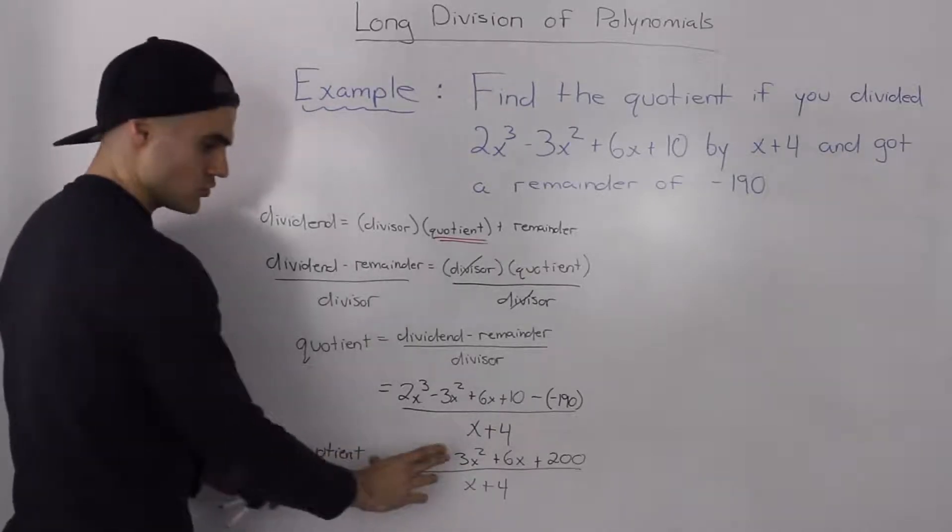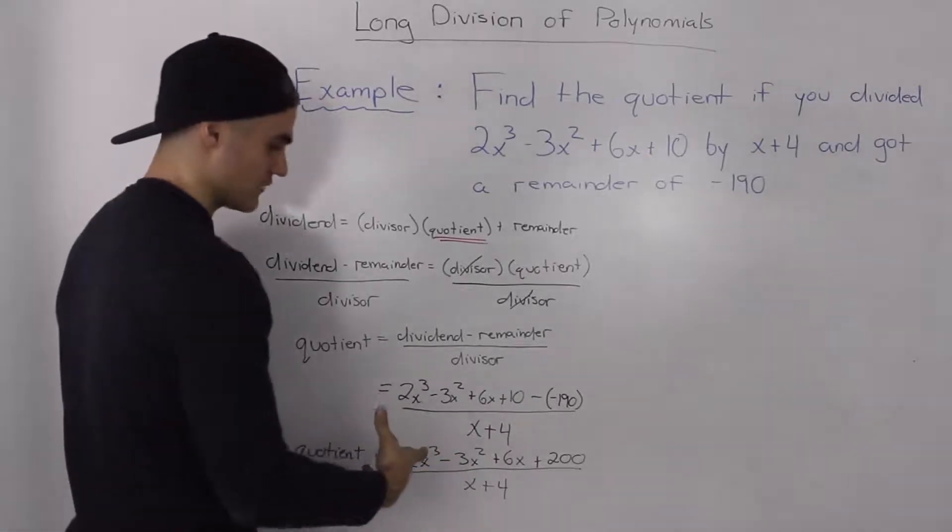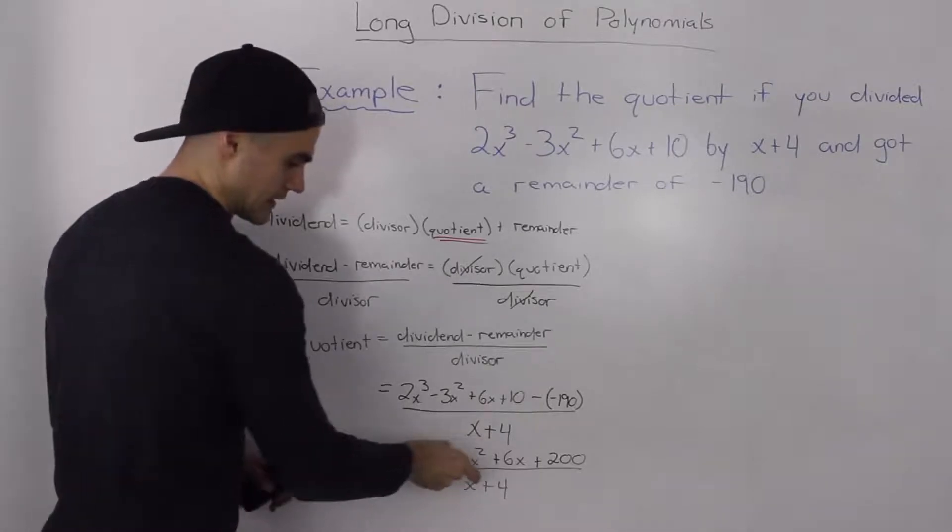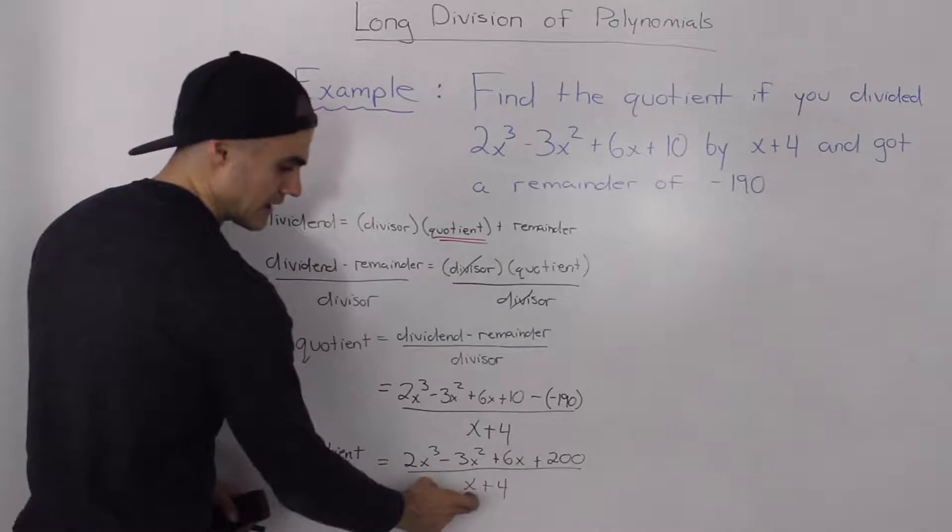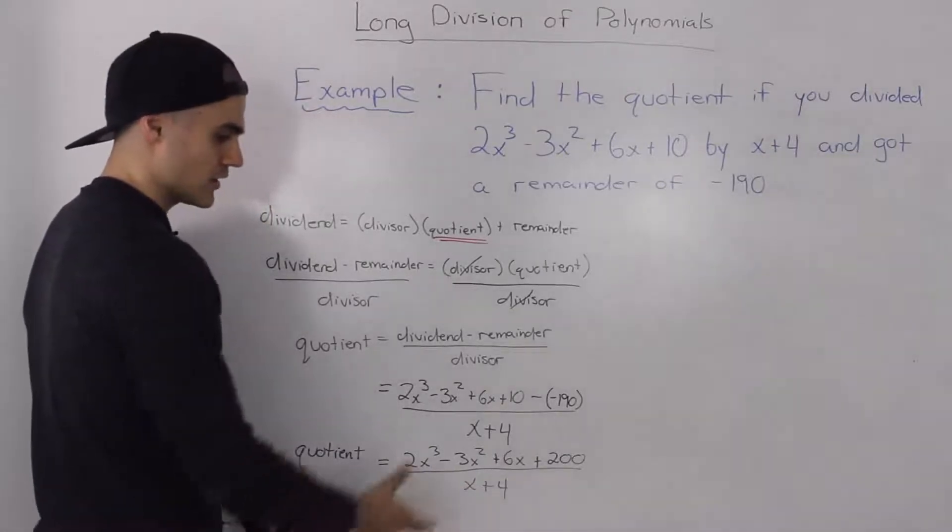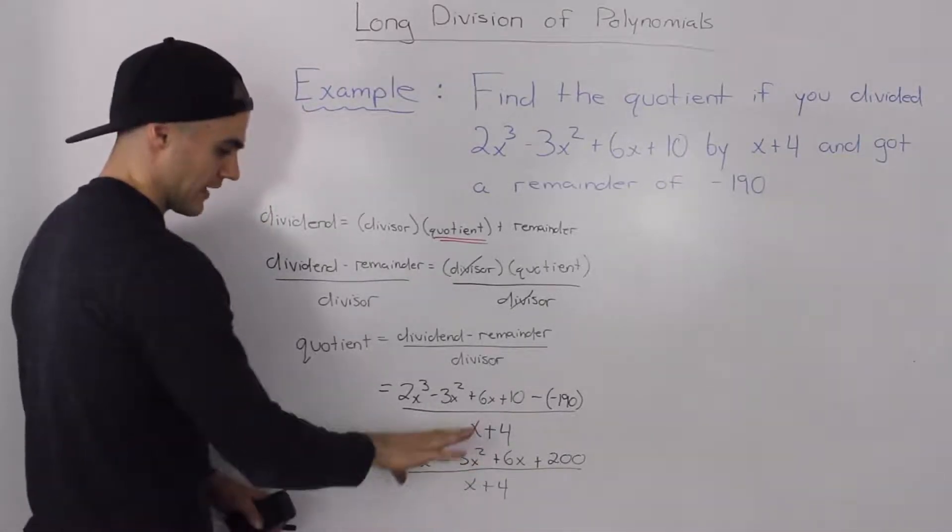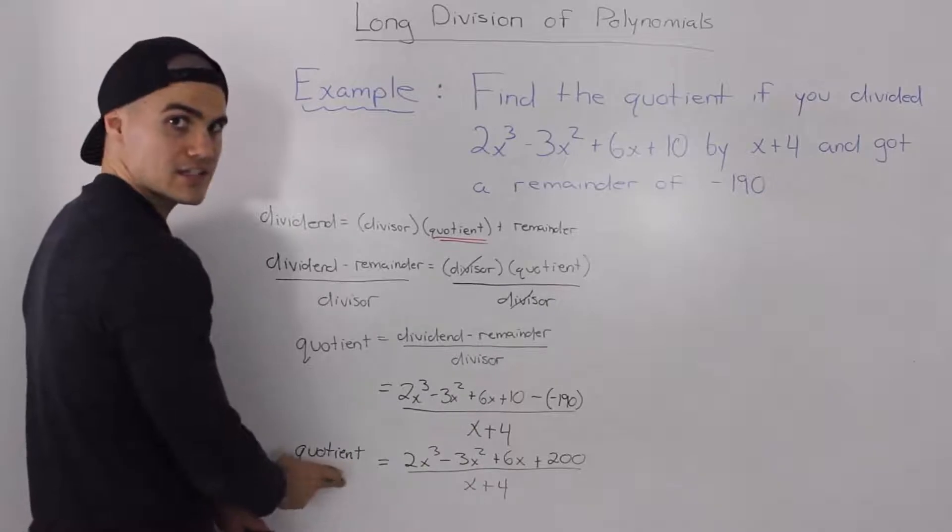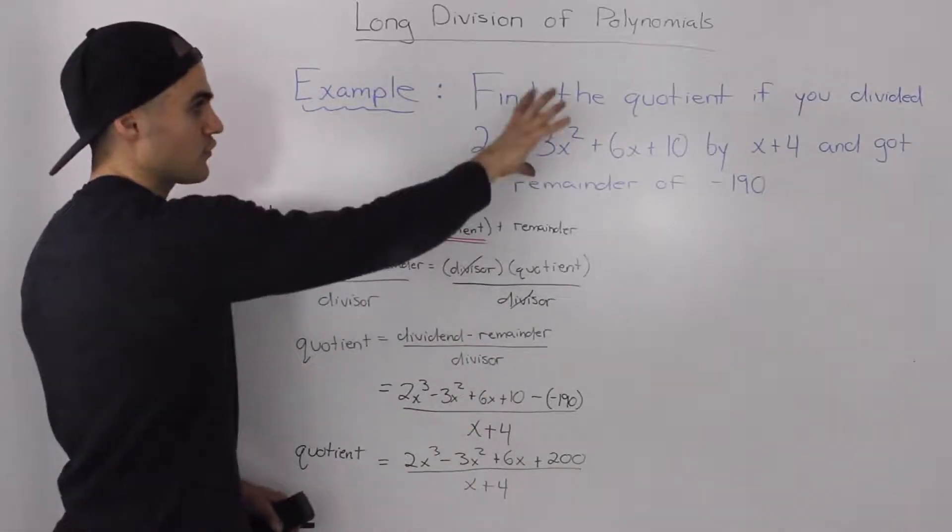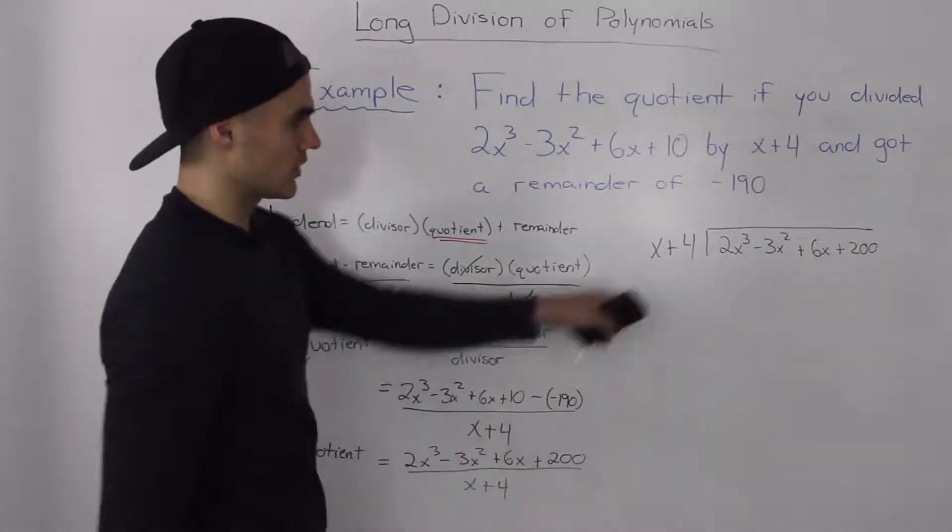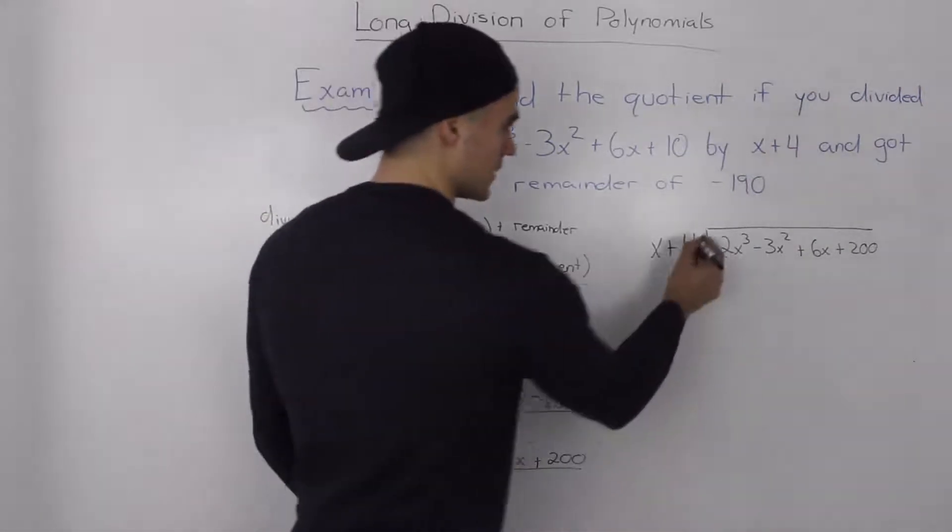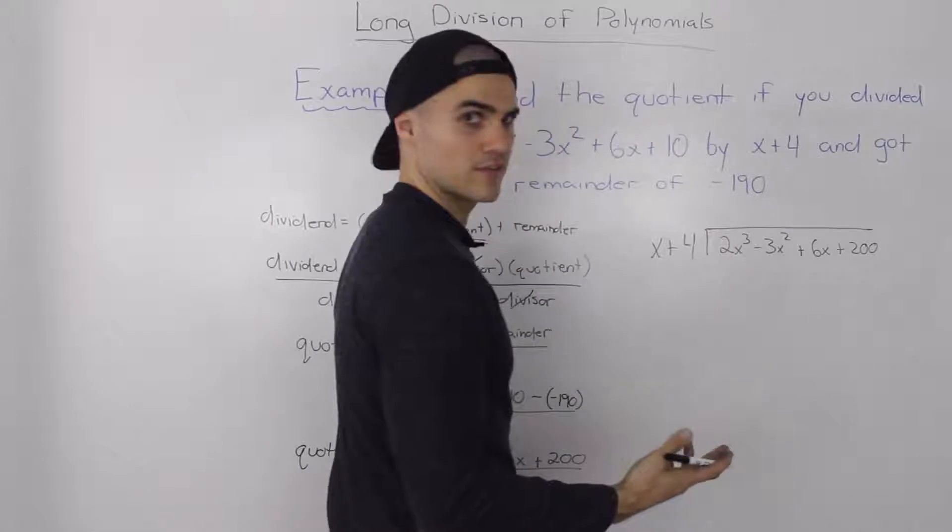And then notice how this quotient now is in terms of division. It's basically this new polynomial in the numerator divided by x + 4. So we can just perform long division on that and then whatever we get, the answer would be our quotient for our original question.